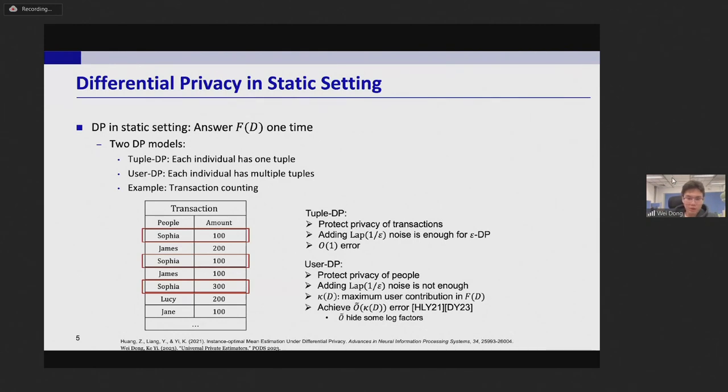Under user-DP we protect the privacy of people, and in this setting adding constant noise is not enough. The state-of-the-art algorithm achieved error to the big O kappa d where kappa d is a maximum user contribution in the result F(D). And in this example that is equal to three. Here I use tilde big O to hide some log factors.